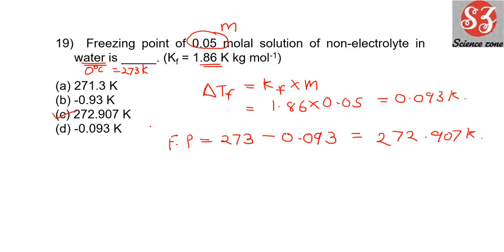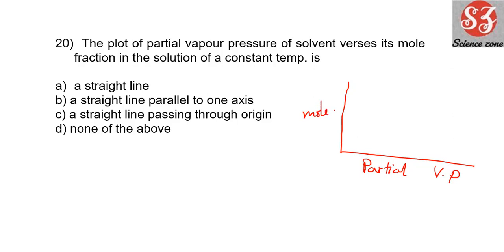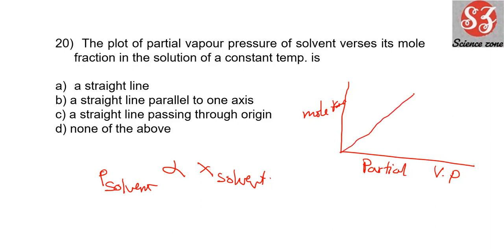Next: 'A plot of partial vapor pressure of solvent versus its mole fraction of solution at constant temperature is...' At constant temperature, partial vapor pressure of solvent is directly proportional to mole fraction of solvent. So as partial vapor pressure increases, mole fraction also increases, giving a straight line through the origin. Answer is option C: a straight line passing through the origin.